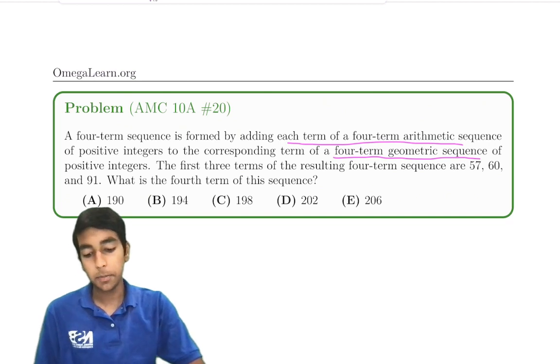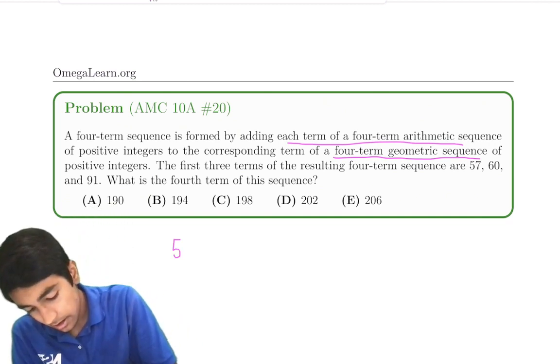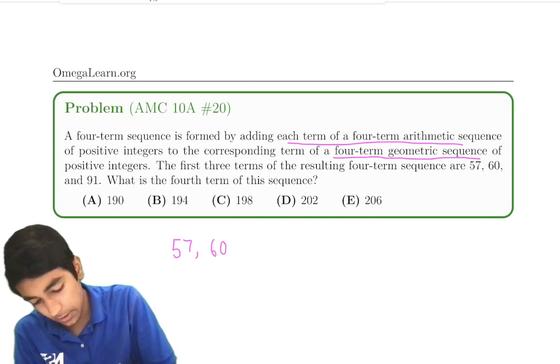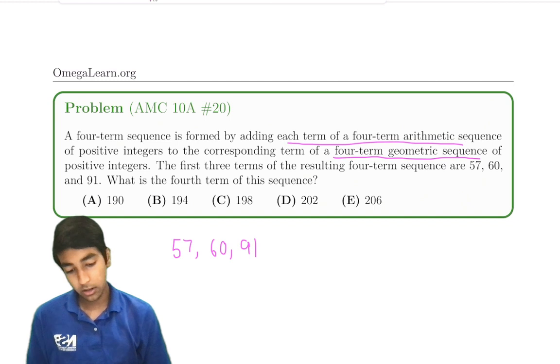The first three terms of the resulting four-term sequence are 57, 60, and 91. What is the fourth term in the sequence?